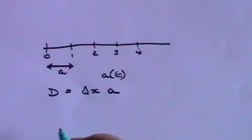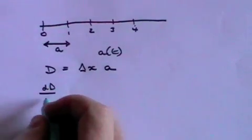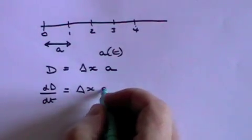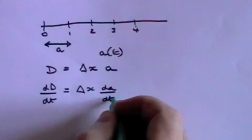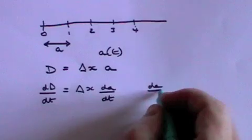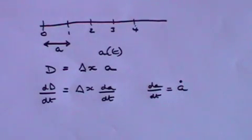We can differentiate that with respect to time. dD with respect to time is delta x times dA over dt. We can write dA by dt as a dot. It's a convention. dA by dt is a dot.